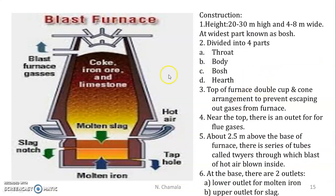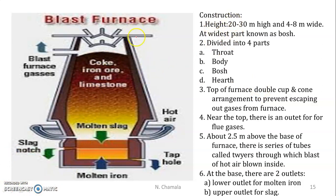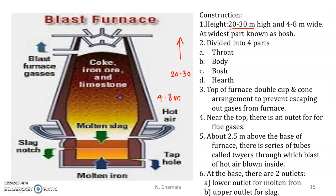Now we are going to see the construction of the blast furnace. The height of the blast furnace is 20 to 30 meters high and 4 to 8 meters wide. At the widest part it is known as the bosch.